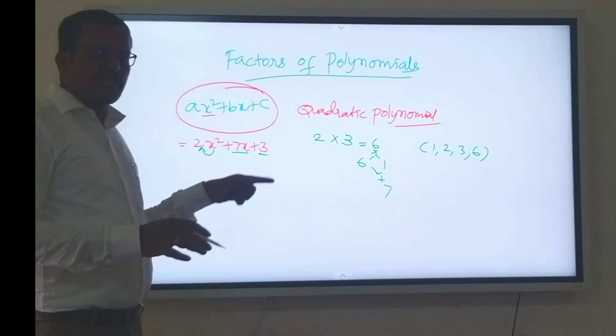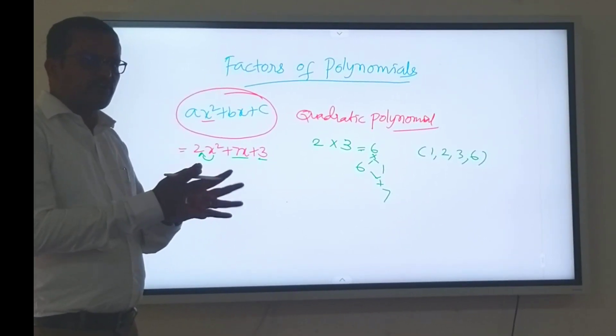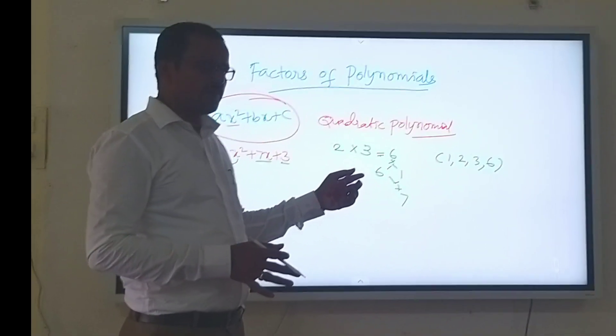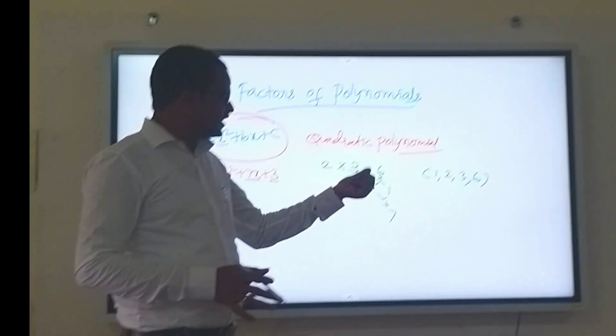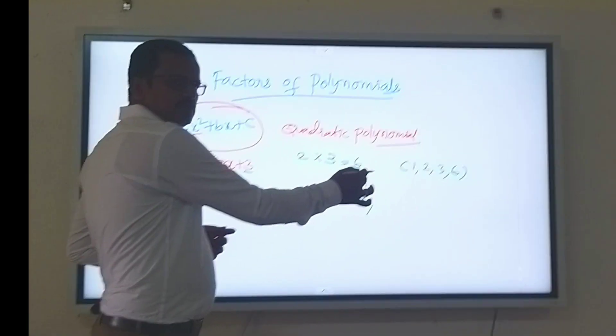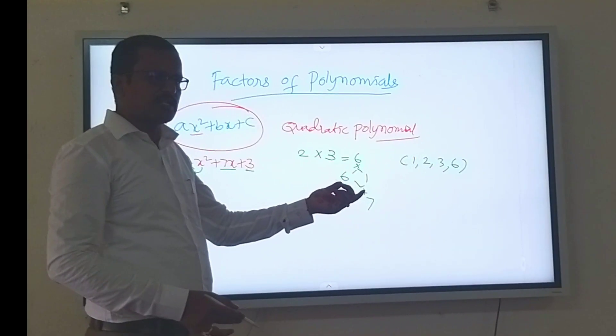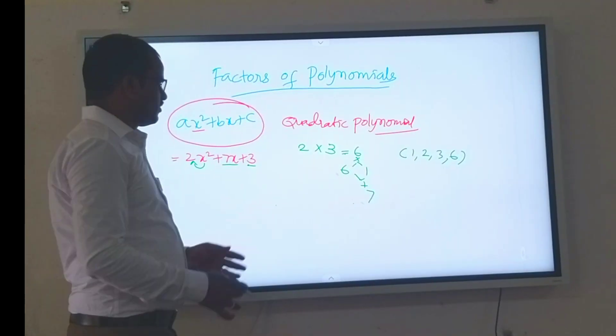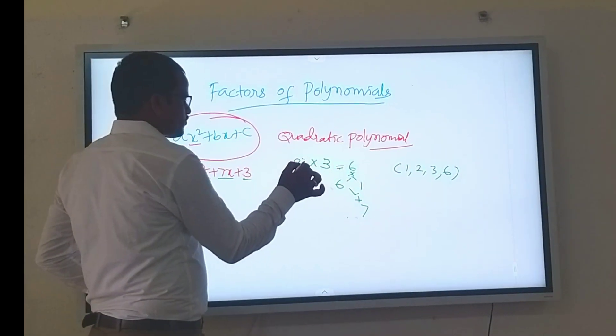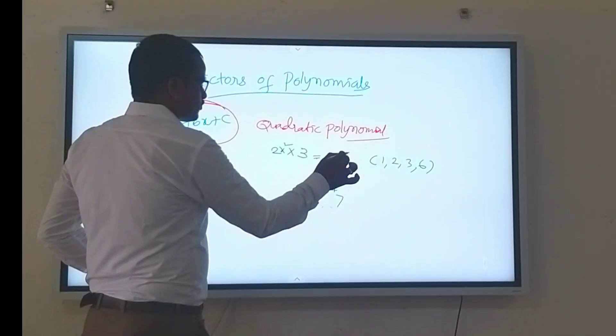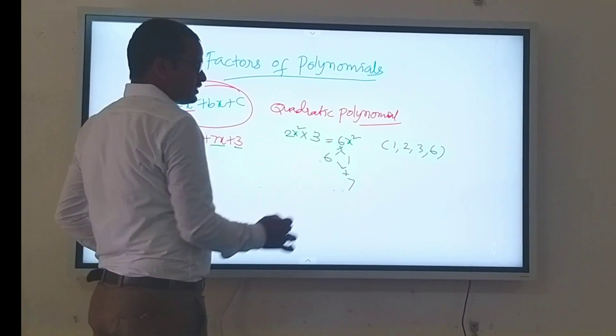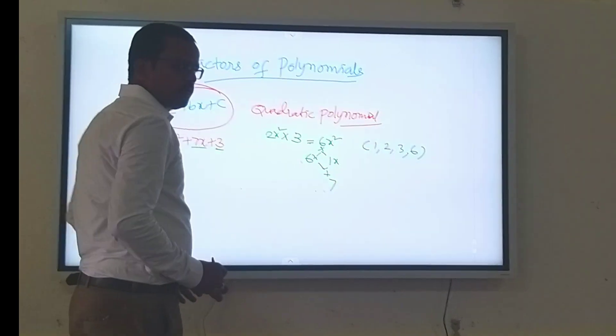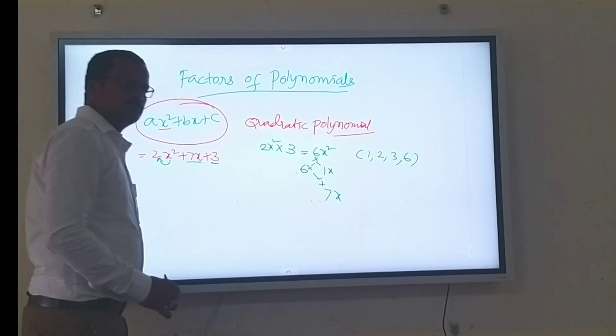Therefore, 7x can be split into factors such that if you multiply 2 factors, you must get 6, and then if you add these 2 factors, you got 7. That is the main condition. Here we have x square, and then 2x square into 3 is 6x square. 6x square can be split such that 6x into 1x equals 7x.